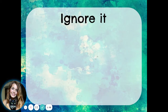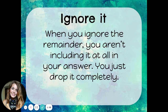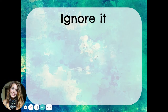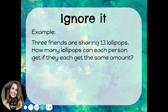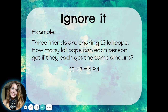Another option is to ignore the remainder. When you ignore the remainder, you aren't including it at all in your answer — you just drop it completely and leave it off. Like in this problem: three friends are sharing 13 lollipops. How many lollipops can each person get if they each get the same amount? Well, the division problem we're solving here is 13 divided by three, and that's four remainder one.